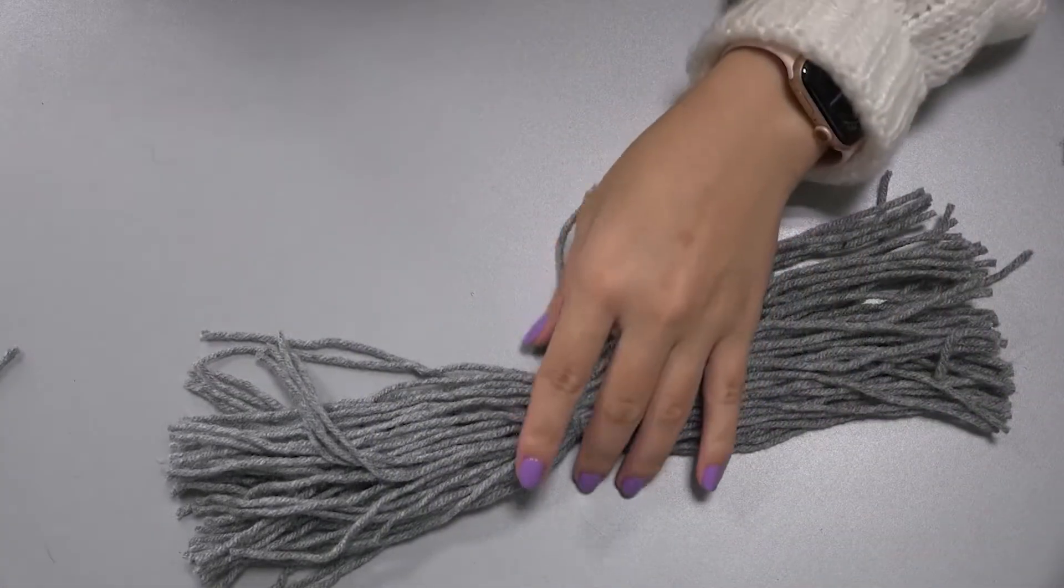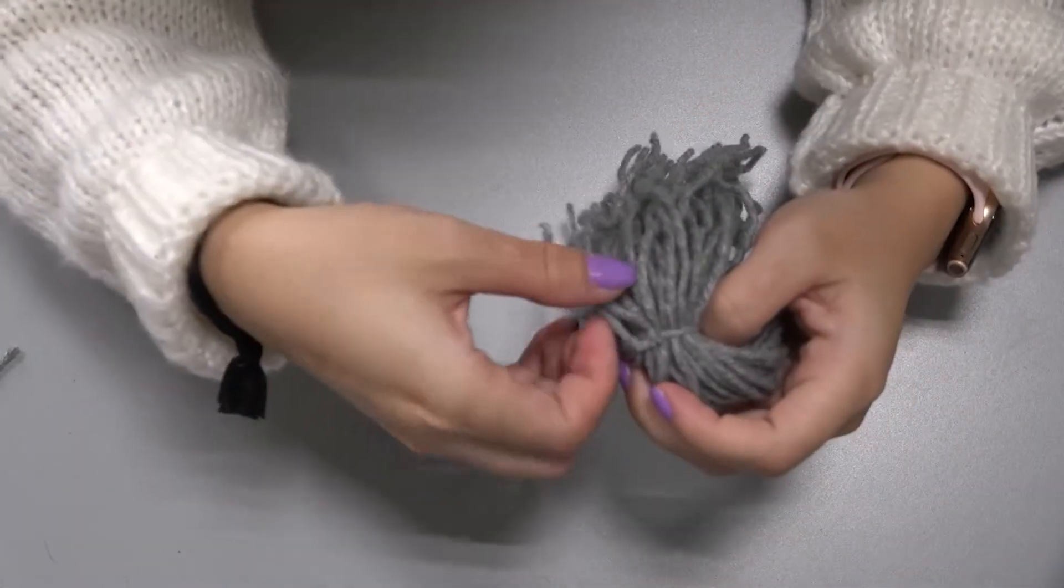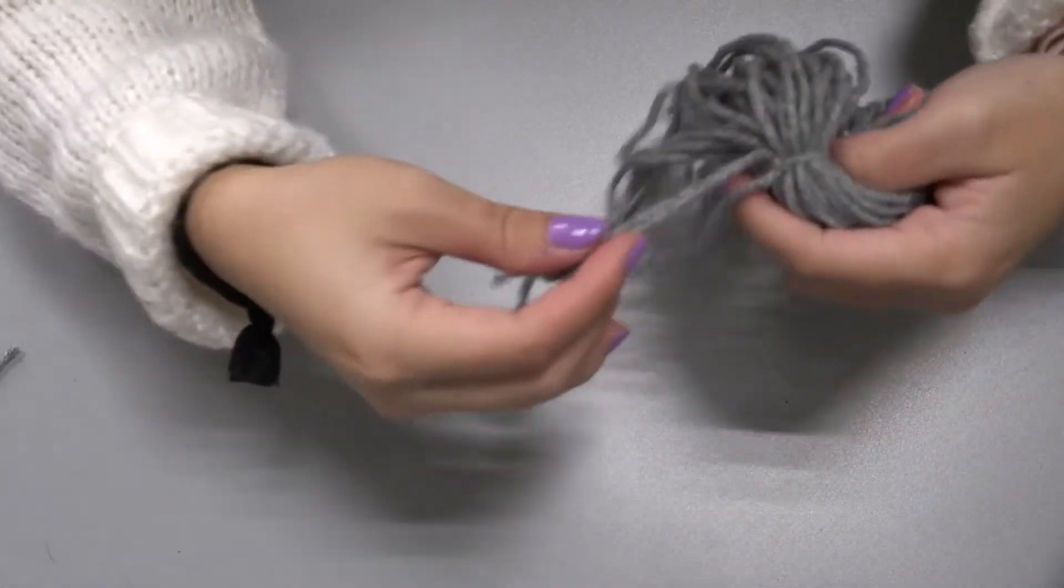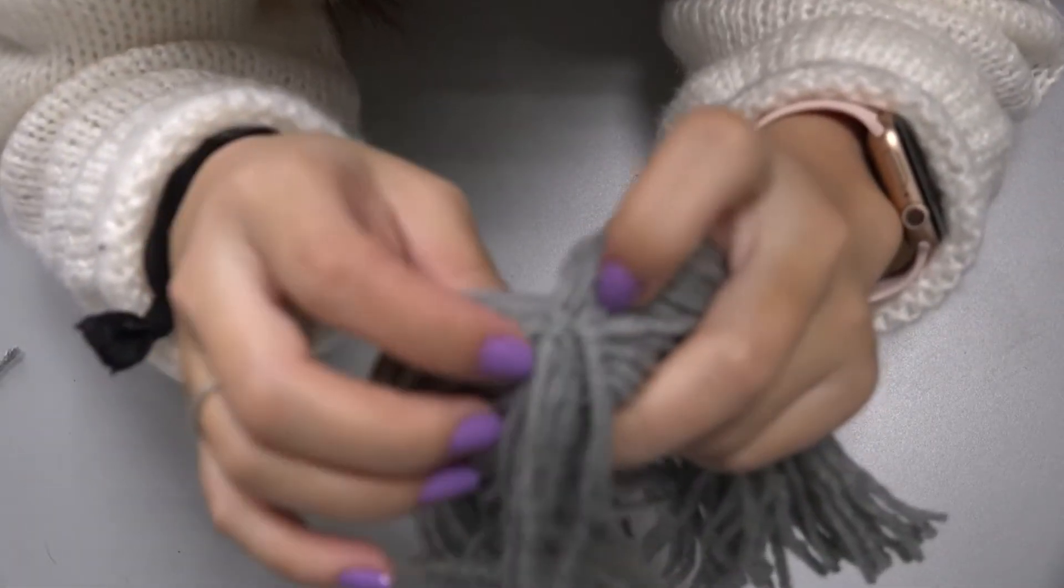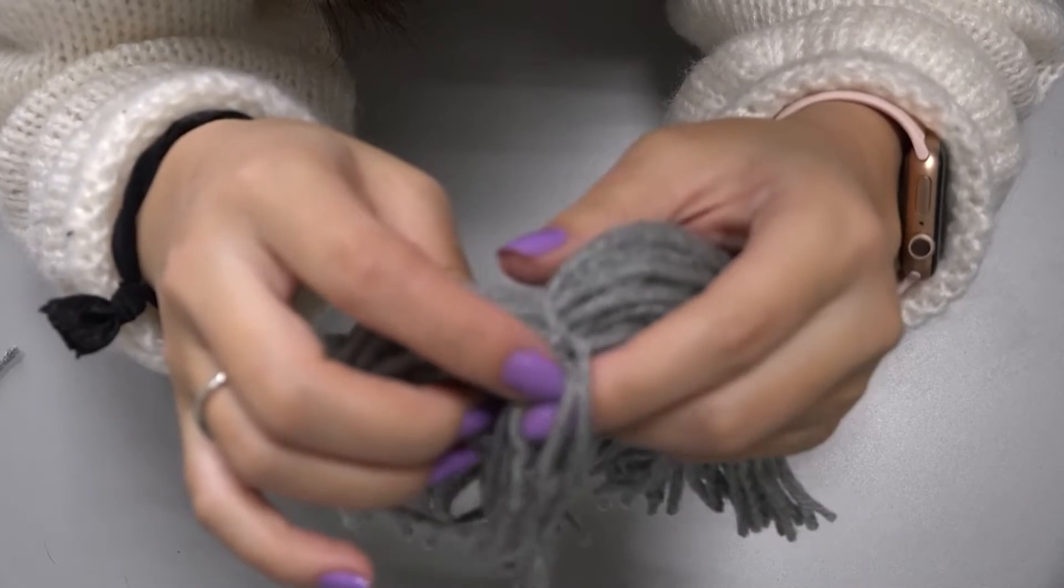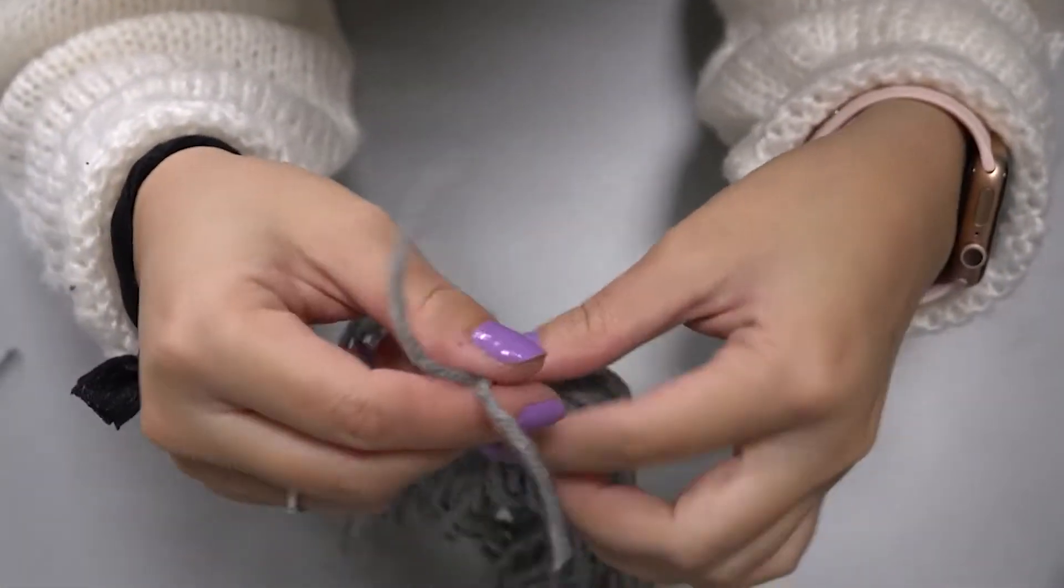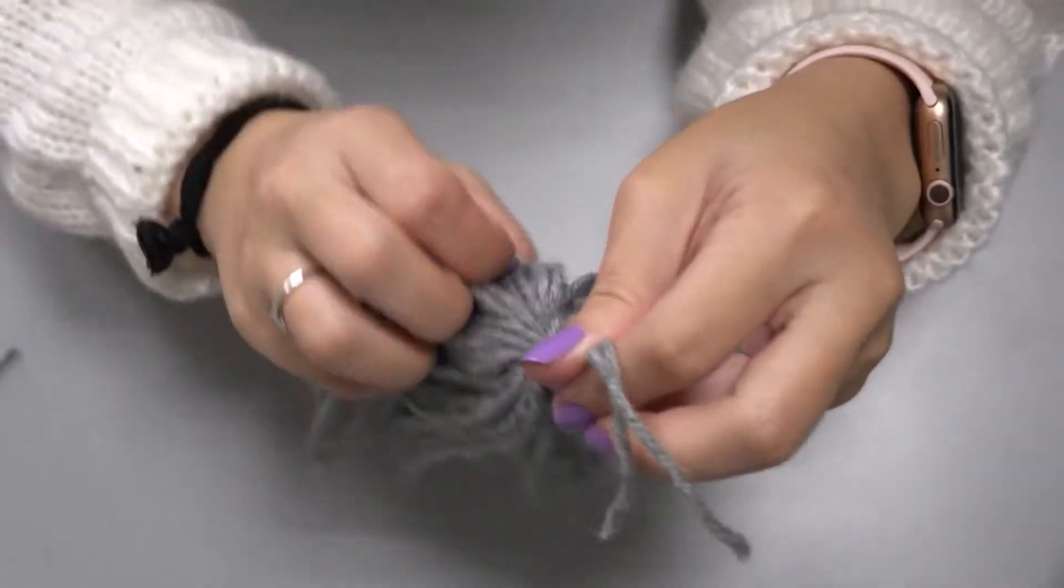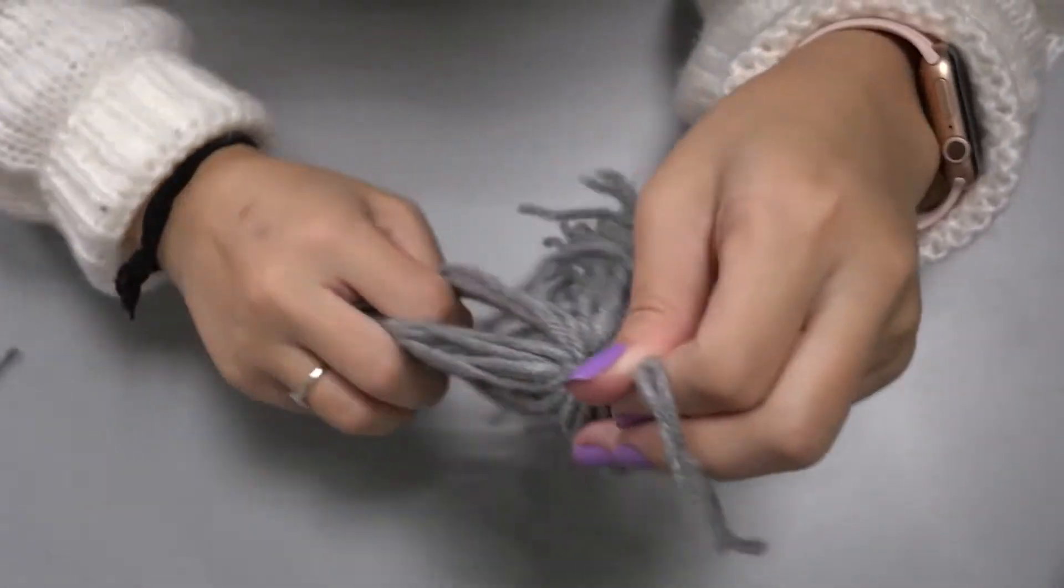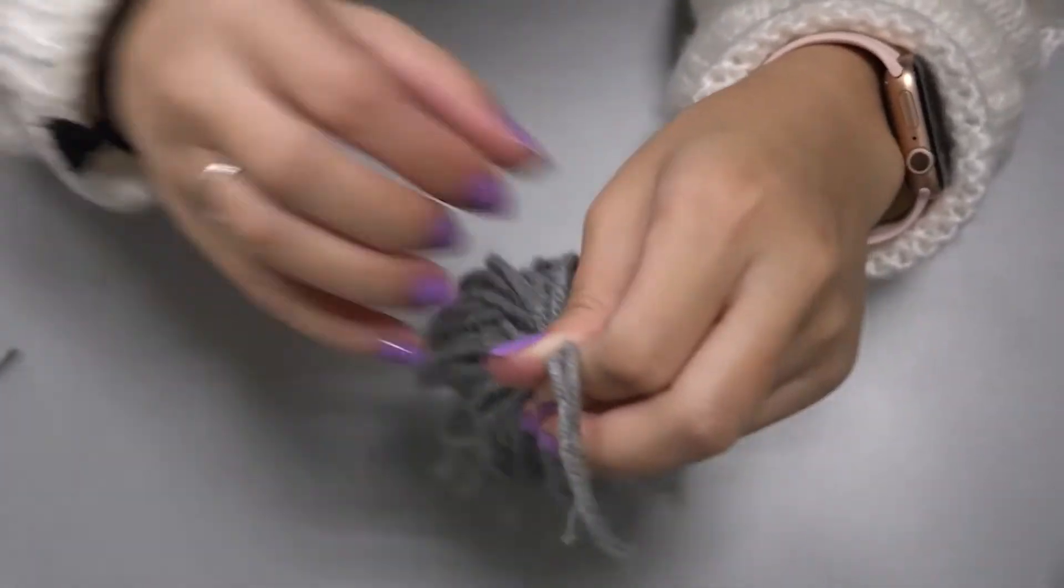So then you're going to put your book and your scissors to the side. And then you're going to grab the shorter yarn that you tied at the top. So you'll be able to tell which yarn that is that you tied. Here you grab the two pieces. You're going to hold that with one hand and then comb the yarn around with your other hand.